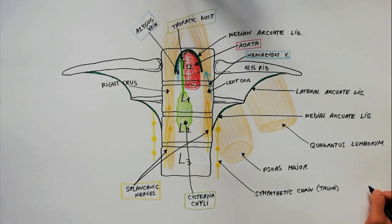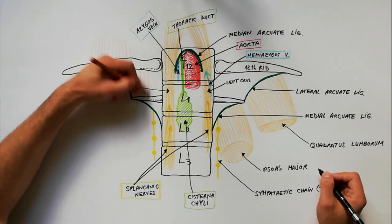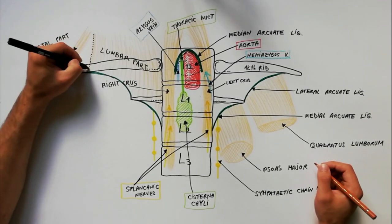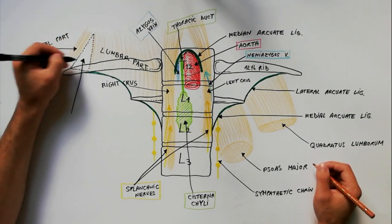To conclude this video, we will emphasize the lumbocostal triangle, which is also called the Bochdalek triangle. This triangle is a space between the costal and lumbar parts of the diaphragm.